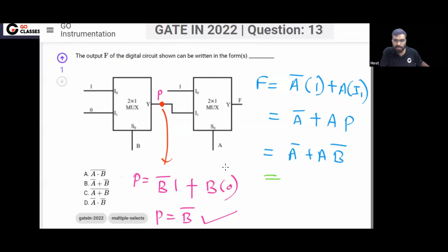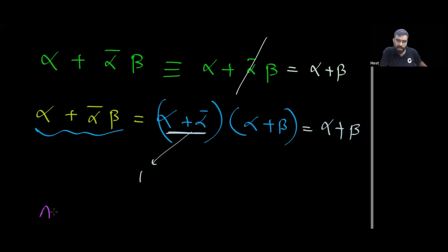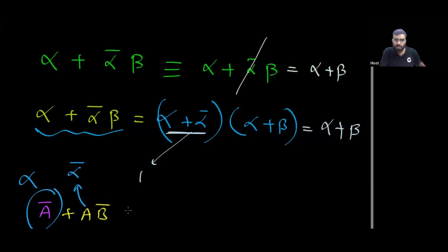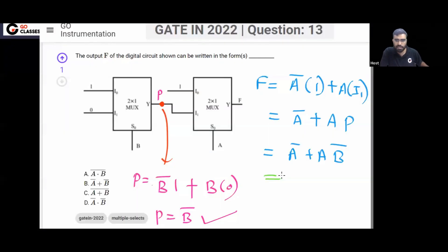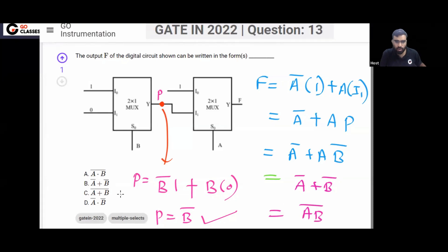Applying this rule here: F = A̅ OR A·B̅. Here α is A̅ and ᾱ is A. So we can remove A, giving F = A̅ OR B̅. By De Morgan's law, A̅ OR B̅ equals (A·B)̄, which is a NAND gate. So the answer is option A.